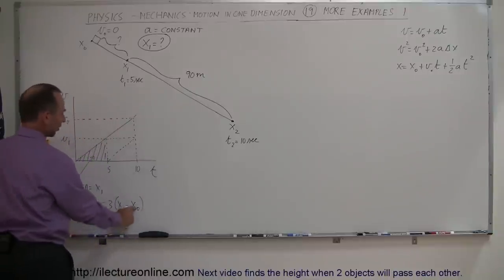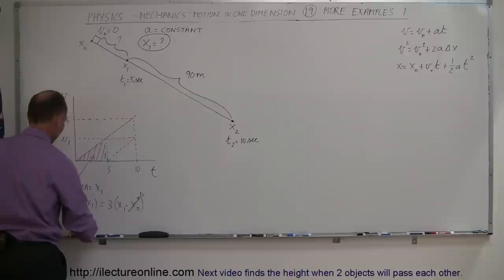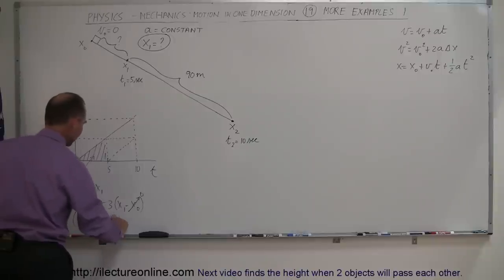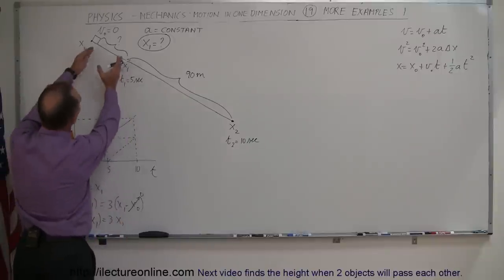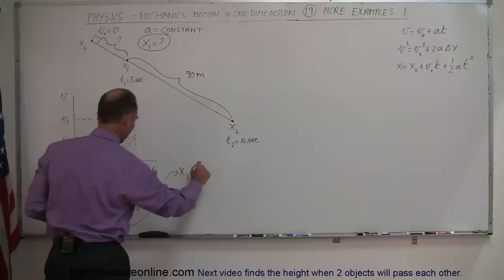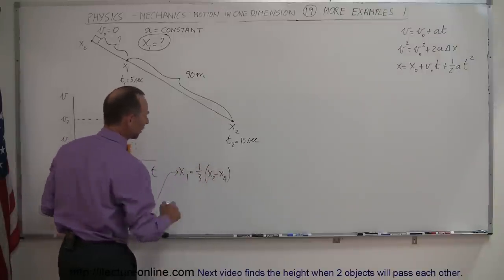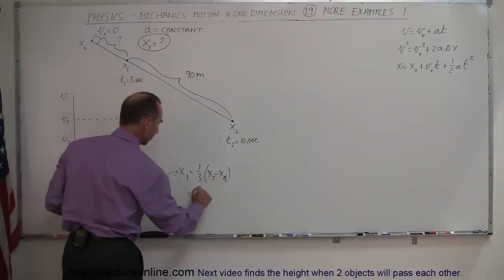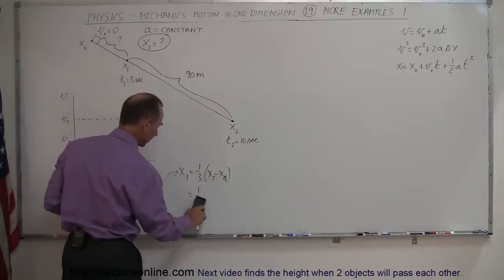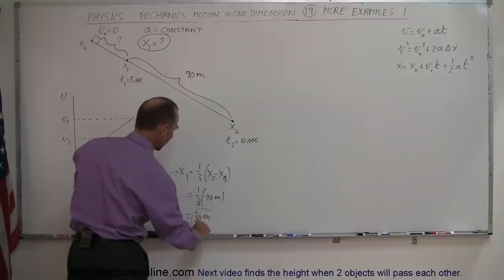So we can say that x2 minus x1 — the distance from x1 to x2 — is equal to three times the distance from x-sub-0 to x-sub-1, which is three times x-sub-1. Since x-sub-0 is equal to zero, x2 minus x1 equals three times x1, which means x1 is equal to one-third the distance from x1 to x2. Since that distance is 90 meters, x1 equals one-third times 90 meters, which is 30 meters.